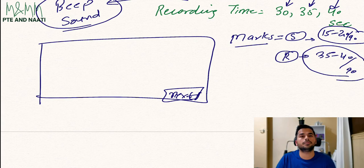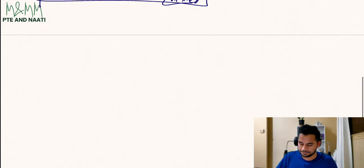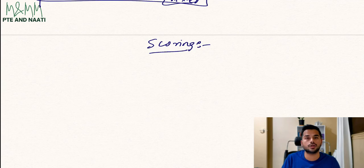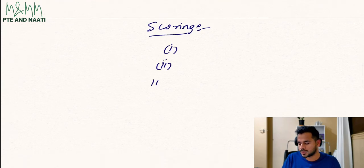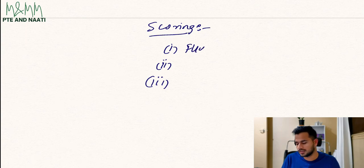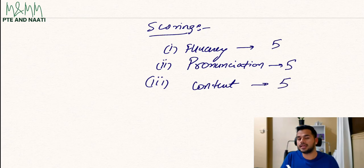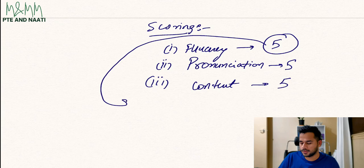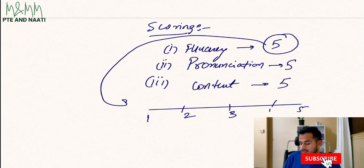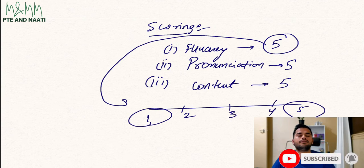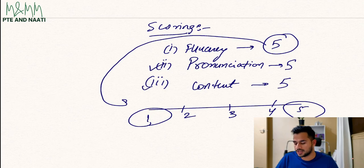Let's see how this topic is scored in the real PTE exam. The scoring can be divided into three different parts: fluency, pronunciation, and content. Each component is worth five points — not five marks, but a scale from one to five, with one being the lowest and five being the highest.